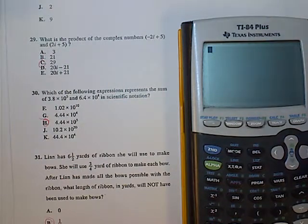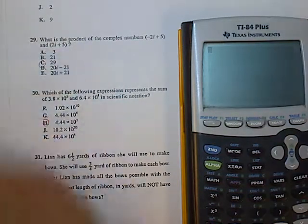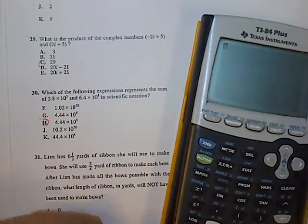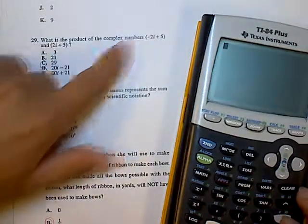So, for 29, whenever you come across a question with i's, it's probably best to use the calculator. And in this case, they want you to find the product of these two terms.